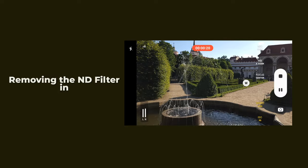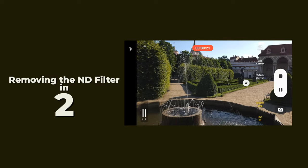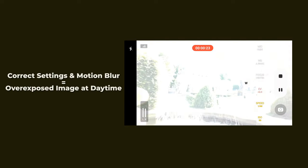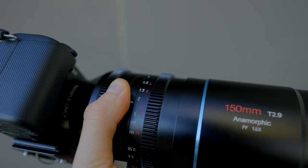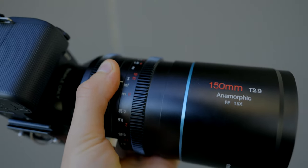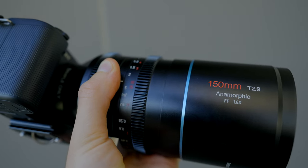It's not necessary to have ND filters on the lens at all times, but if you set all the settings properly on your S23 Ultra or any other camera, your footage will be overexposed if you're filming during a bright day. A bit later in this video I will get to the image quality on both of these cameras.